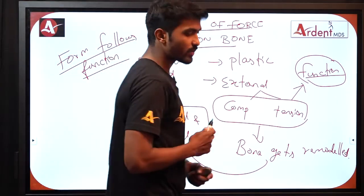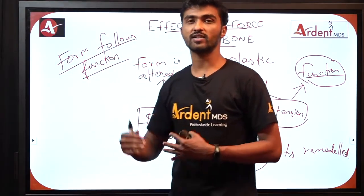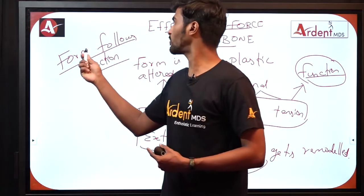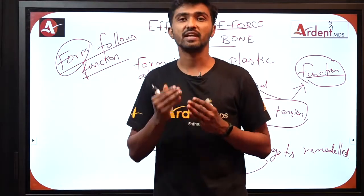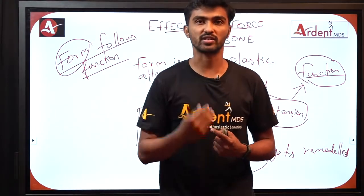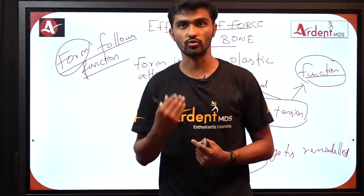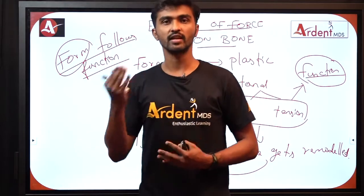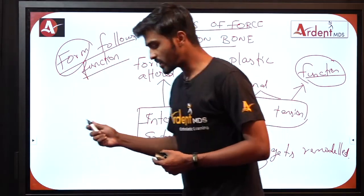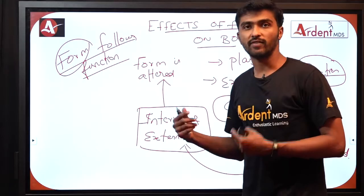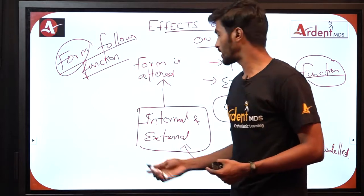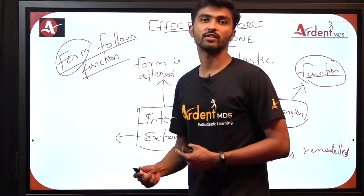This terminology was given by a doctor called van der Klaas, which was then expanded into the functional matrix hypothesis by Dr. Melvin Moss. The shape and size of the bone gets altered in response to function — function can be load, pressure, compressive stress, or even mastication or chewing. Upon stress or function, the internal and external architecture of the bone tends to get changed by means of remodeling, and this is called Wolf's Law of Transformation of the Bone.